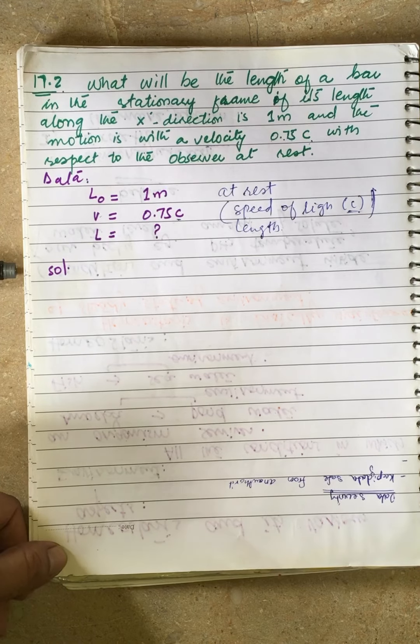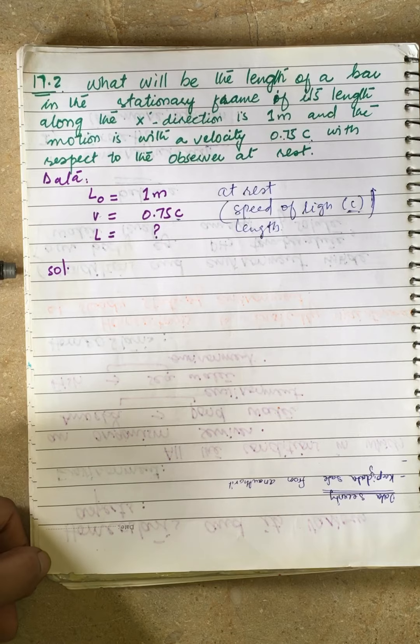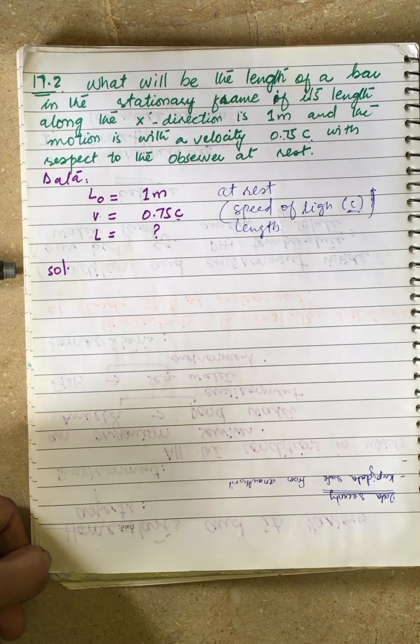Numerical number 2 is: What will be the length of a bar in the stationary frame if its length along the x direction is 1 meter and the motion is with velocity 0.75c with respect to the observer at rest?